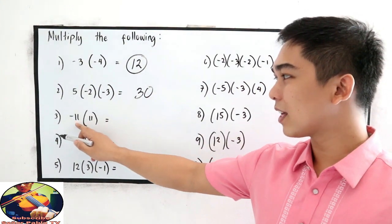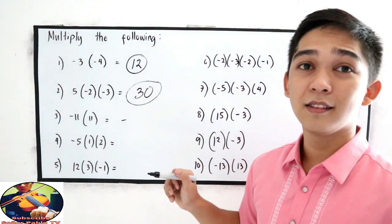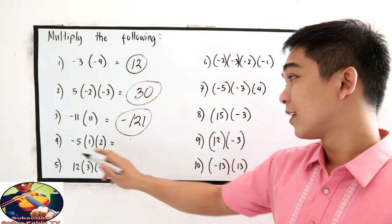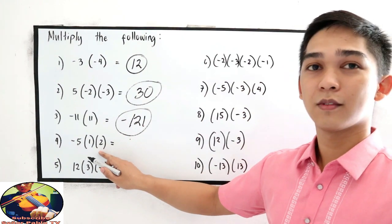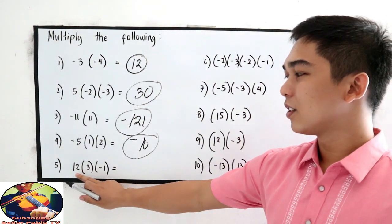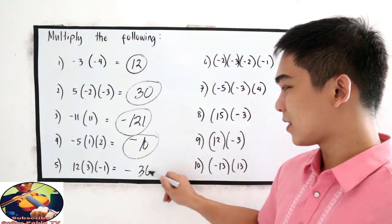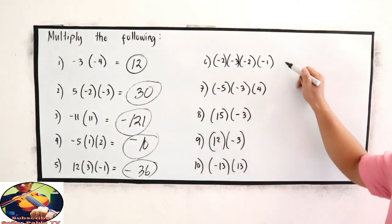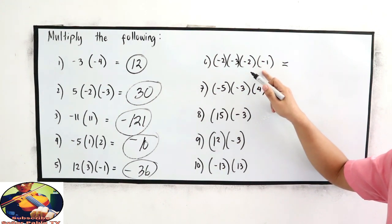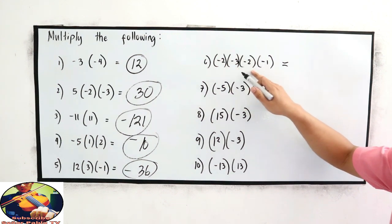Number 3: negative 11 times positive 11 — unlike signs, so the sign is negative — 11 times 11 is 121, so negative 121. Number 4: negative 5 times 1 times 2 — that is negative 10. Number 5: 12 times 3 times negative 1 — that is negative 36. Number 6: we count 4 negatives — that is even — so positive. 2 times 3 is 6, times 2 is 12, times 1 is positive 12.